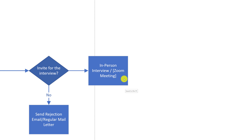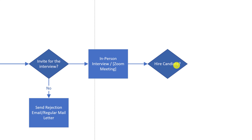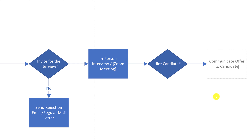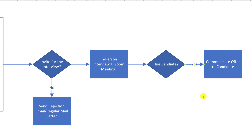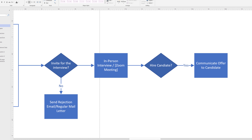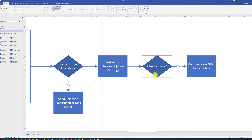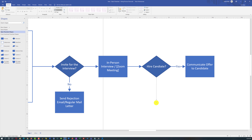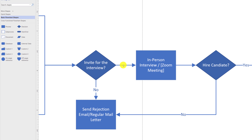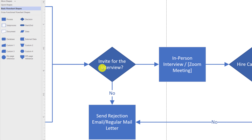After the interview, you may need to make a decision. If you choose to hire, communicate this with a letter of offer and reflect it with the 'Yes' flow. If you choose not to hire, show a rejection letter step connected with the 'No' branch. If you notice branches are missing labels — such as 'Yes' missing on the 'Invite for Interview' arrow — you can always add text by editing the arrow.